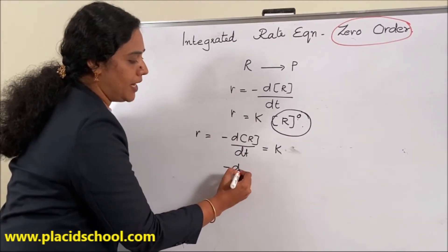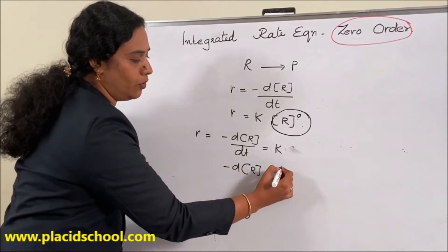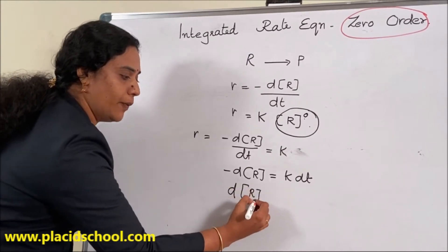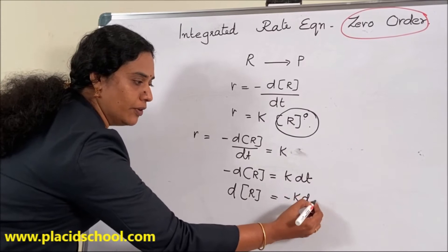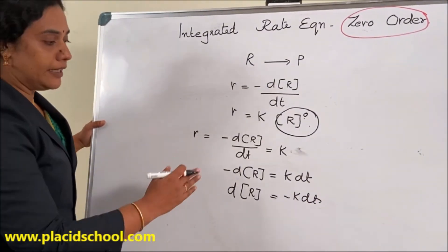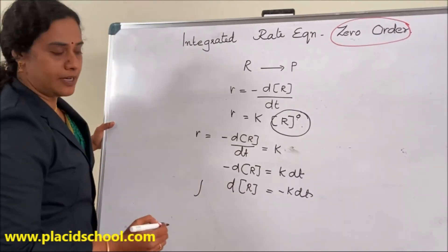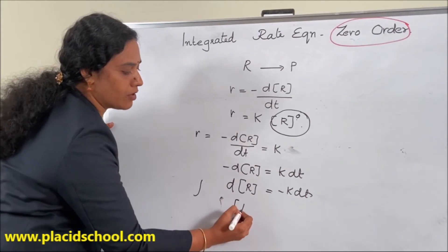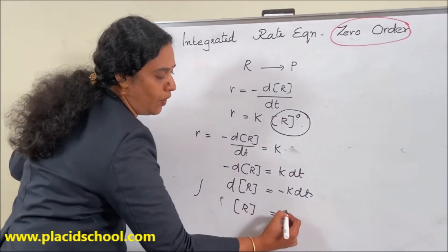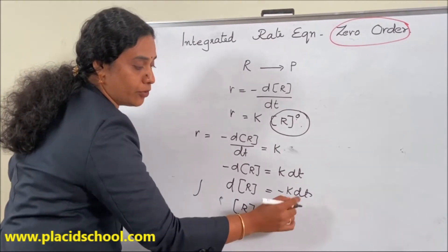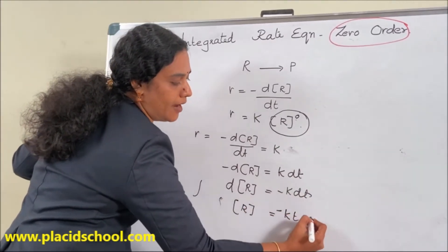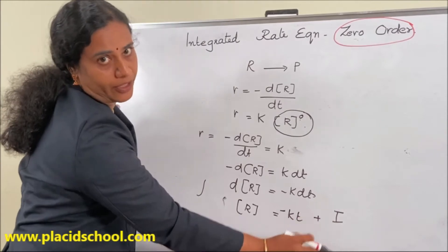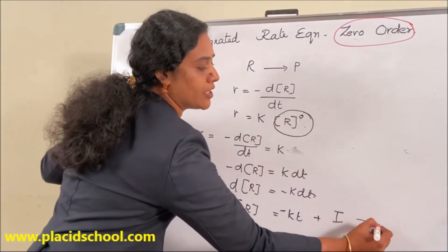Therefore, minus dR is equal to K dt, which rearranges to dR equal to minus K dt. On integrating both sides, the integral of dR gives molar concentration of R, which equals minus K times t plus i, where i is the constant of integration. This is equation 1.